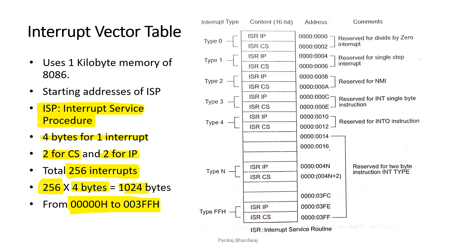Out of the 256 software interrupts, five are predefined: INT 00, INT 01, INT 02, INT 03, and INT 04 — also called Type 0, Type 1, Type 2, Type 3, and Type 4. Type 0 is the divide-by-zero interrupt. When a number is divided by zero, the result is an infinite or very large value.